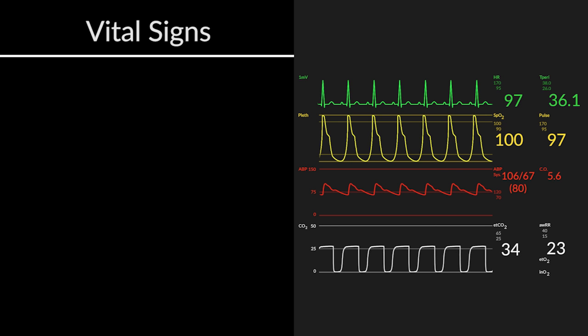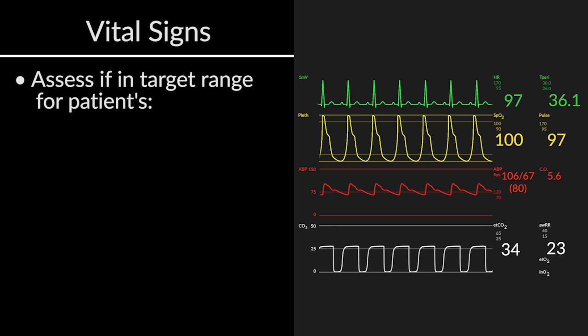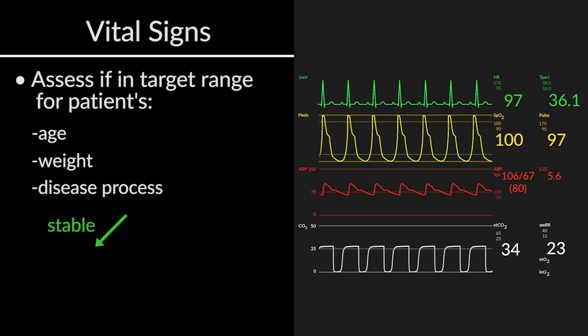This is the first part of the patient safety assessment because patient stability is of the utmost importance. We take a look at the vital signs monitor to assess if our patient's vital signs are within the target ranges for the patient's age, weight, and disease process. If the answer is yes, we are stable, we can proceed with our patient safety assessment.